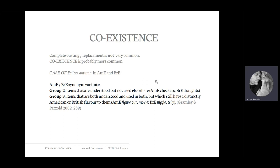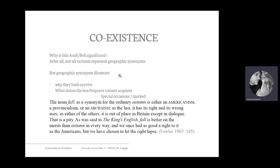The other scenario is coexistence of two variants where one is dominant and the other is less frequent but still survives. One example of this coexistence is the two nouns 'fall' versus its synonym 'autumn.' Fall is the American variant and autumn is the British variant. These two illustrate a situation where both variants survive and it's very unlikely for one to fall out of usage completely. They also illustrate very nicely what happens to the less frequent variant.